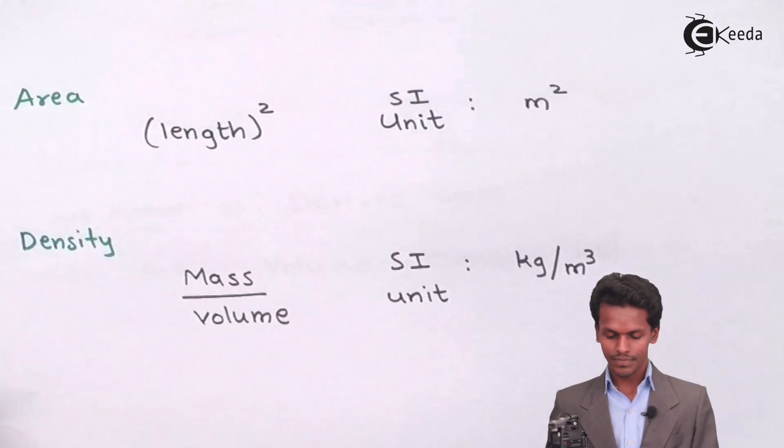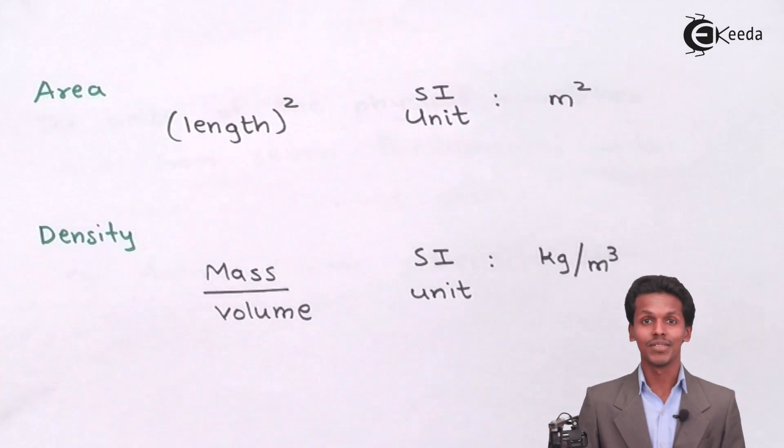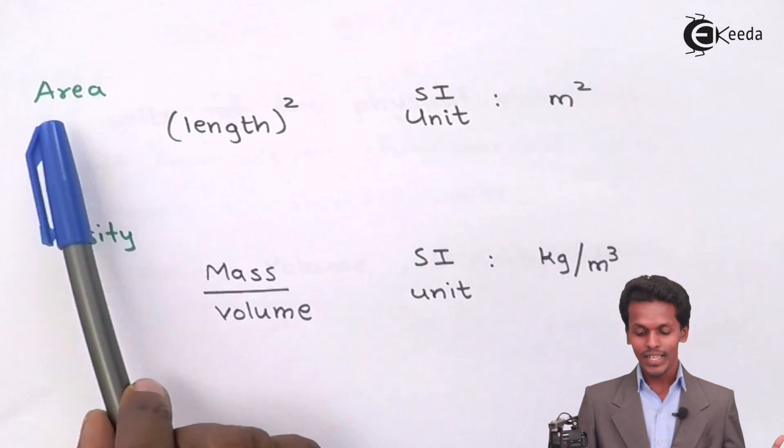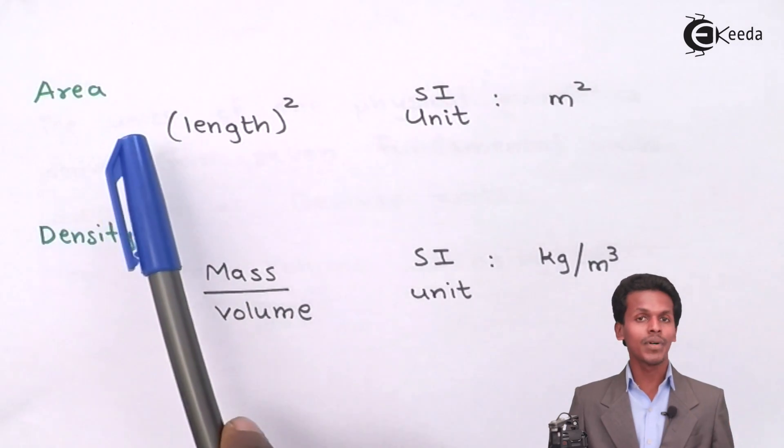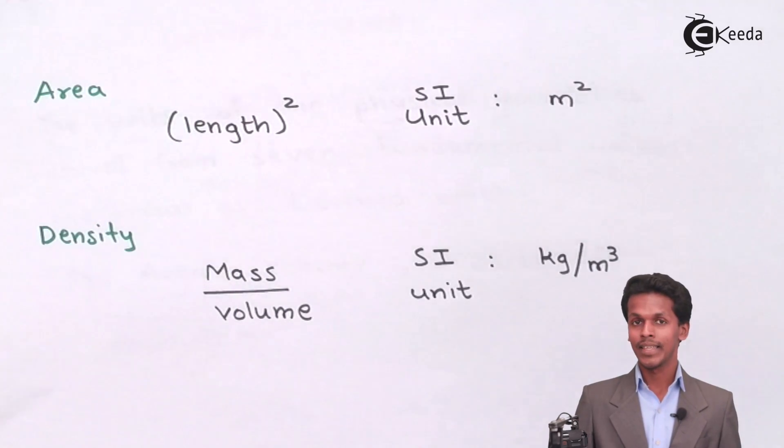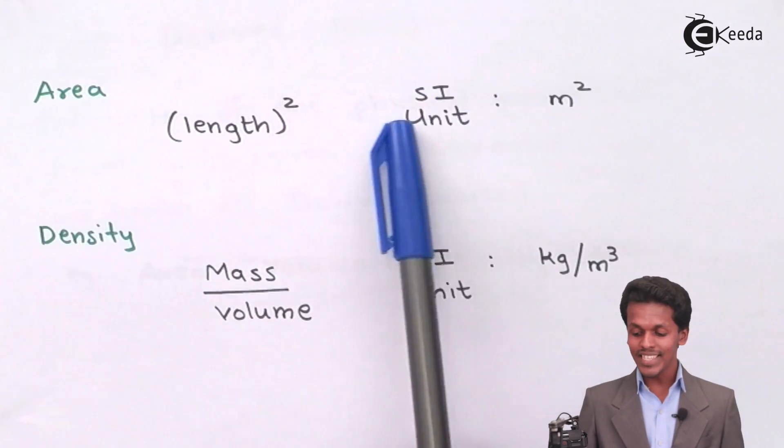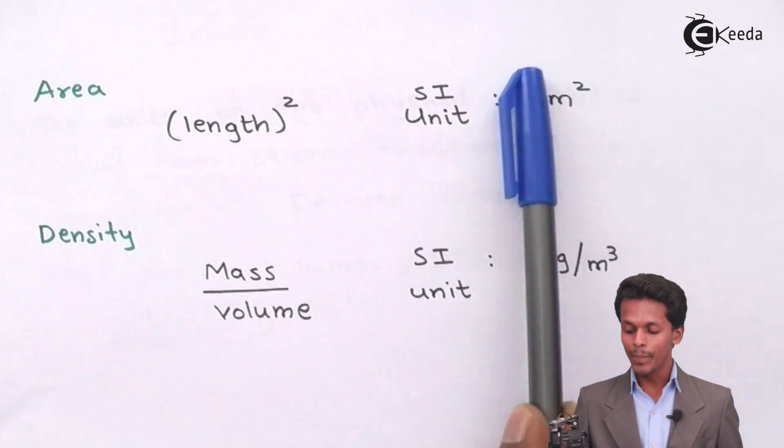The first one is area, that we hear in our day-to-day life and observe when searching for a building or something. Area is nothing but length squared, that is length times length. In the seven fundamental units we learned that length has a unit of meter. Again length is used, so again meter is involved.